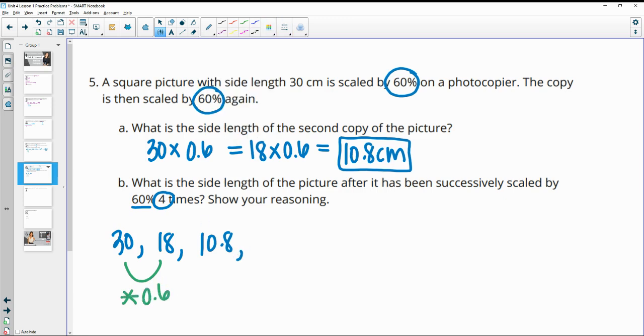So then we'll just continue this. So 10.8 times 0.6 is going to be 6.48. And then we'll multiply by 0.6 again and we get about 3.89 centimeters for that fourth consecutive scaled copy.